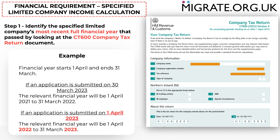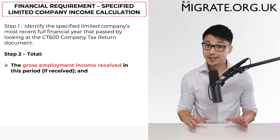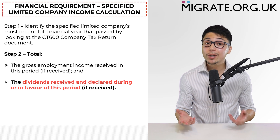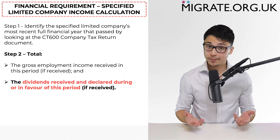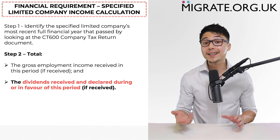On the other hand, if an application is submitted one day after the financial year ends — on the 1st of April 2023 — the relevant financial year will start on the 1st of April 2022 and end on the 31st of March 2023. Because of this, it is quite commonly the case that company accounts need to be filed much earlier than they normally would to comply with standard UK tax rules. The second step involves totalling the sponsor's gross employment income received in that financial year, as well as totalling the dividends received and declared during or in respect of that financial year. The total of these two will be the amount of income includable under category F if everything is evidenced correctly.